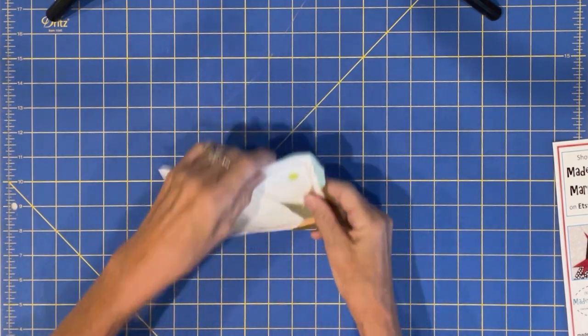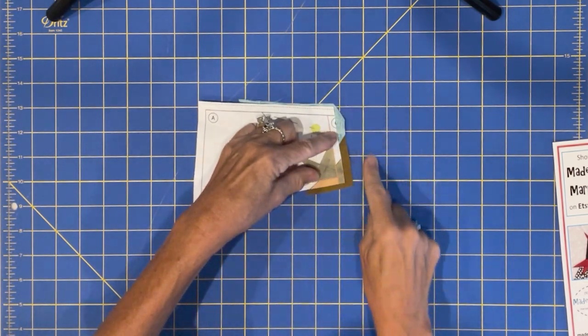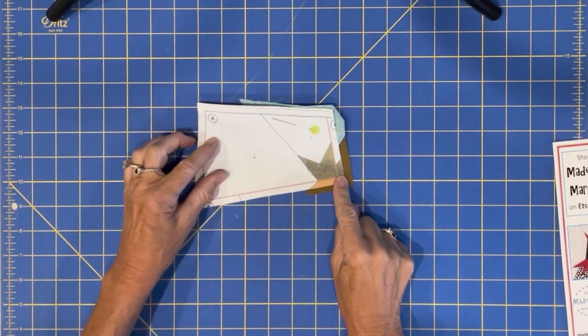I trim off what I don't need. You don't have to be real exact at this point. You can just trim it off generously. And now when I go to the line for three, here's piece three, that other little triangle.